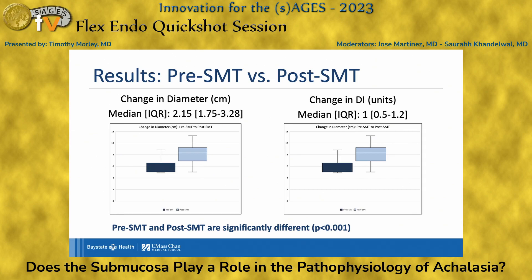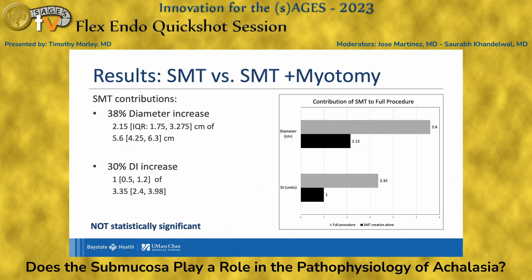What we found was a median increase in diameter of 2.15 centimeters and a median increase in distensibility index of 1, which were statistically significant. When we assessed the overall contribution of the tunnel to the whole procedure, which included the myotomy, we found a 38% diameter increase and a 30% median distensibility increase.